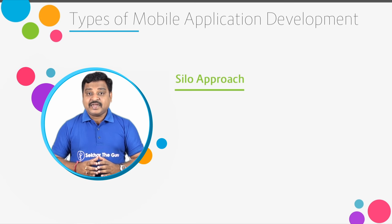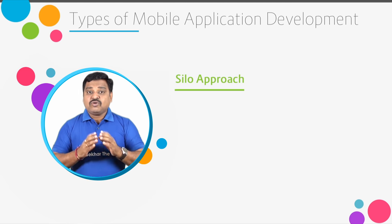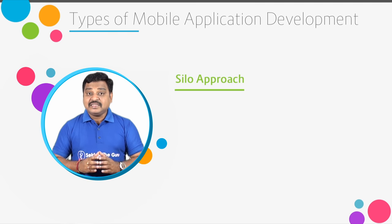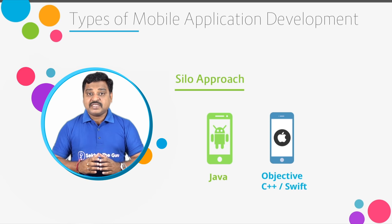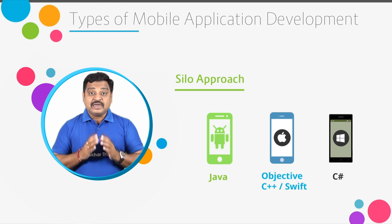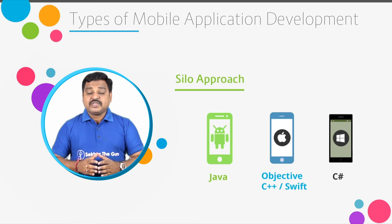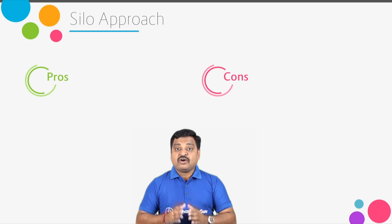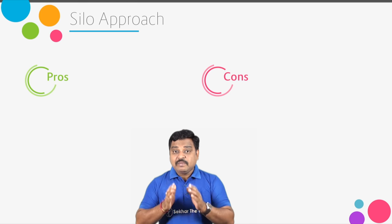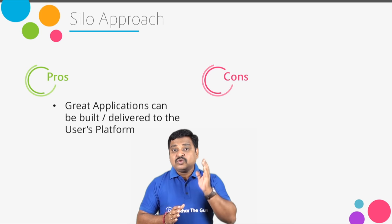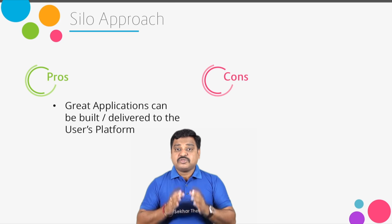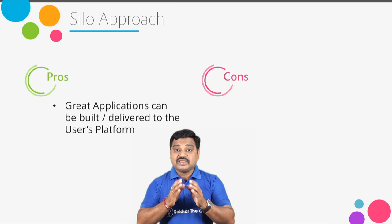Let us understand the Silo approach — it is the native approach of developing mobile applications. That is, Android application development using Java, iOS application development using Objective-C or Swift, and Windows mobile development using C#. Many developers follow the Silo approach. Since we develop applications using their native technology, we can build great applications and deliver to the user's platform, and every concept supported by the platform can be used.